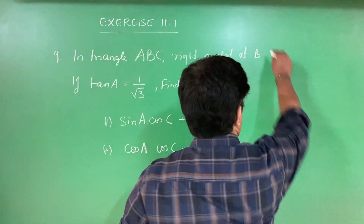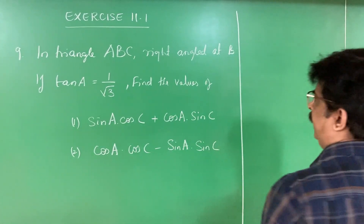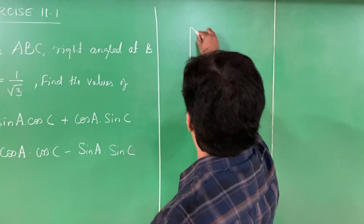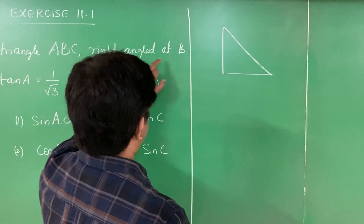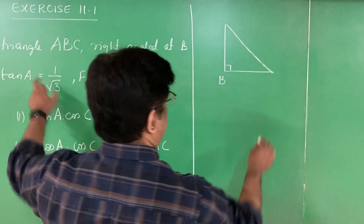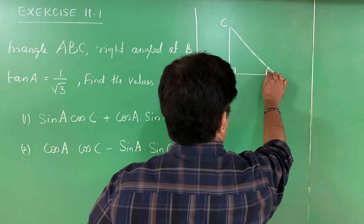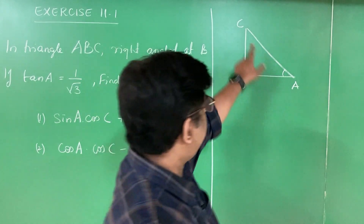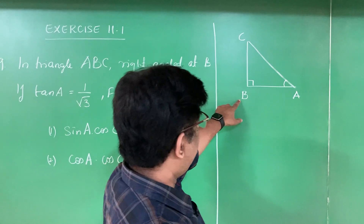What do you have to do? I start solving from here. I need to have both values. Here there is a triangle ABC, right angle at B — therefore this is B. And tan A is given, so I make this as A and this as C. By marking an acute angle at the base, it is easy. Now ABC is a right angle triangle, right angle at B.